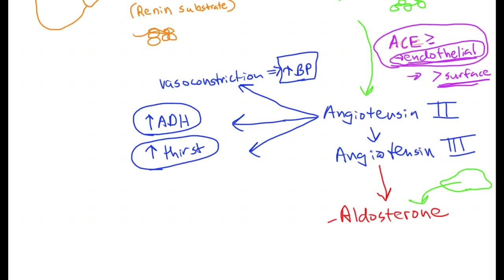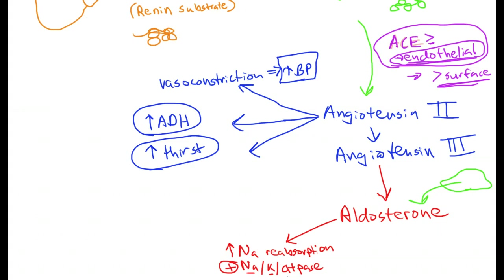Aldosterone works primarily in the distal tubules of the kidney to increase sodium reabsorption. It does this by stimulating the activity of the sodium-potassium ATPase pump. In the sodium-potassium ATPase pump, sodium is exchanged for potassium — so aldosterone causes sodium reabsorption but also causes potassium secretion. The distal tubules are freely permeable to water, so when we have sodium reabsorption, we also have water reabsorption.